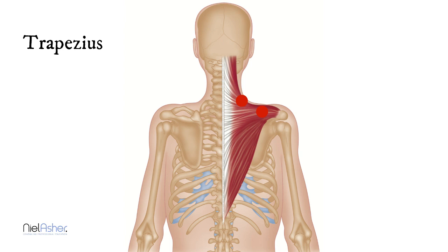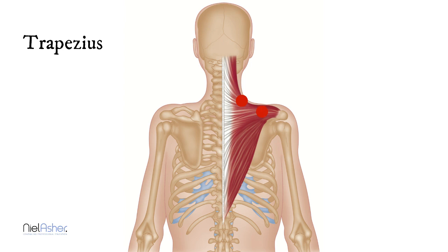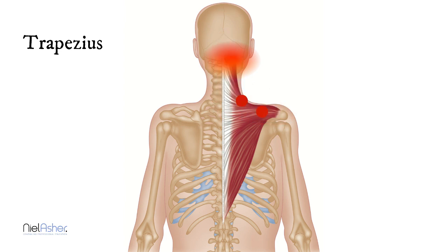Trigger point number two is halfway along this free edge. It's also a very common trigger point. When active, the pain starts where the trigger is and will refer across the trapezius, up the neck, and end up in the base of the skull, which is the most common location for the real concentration of pain.